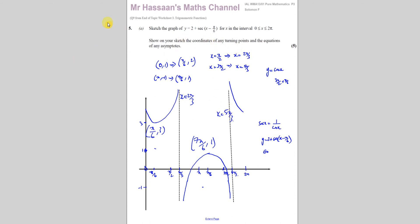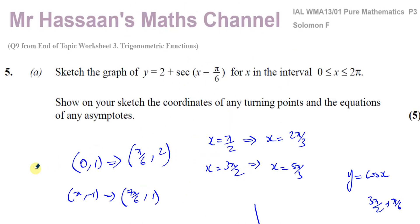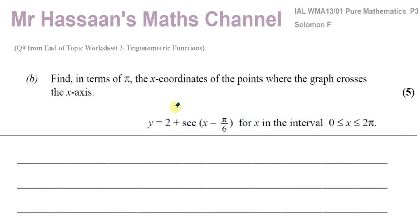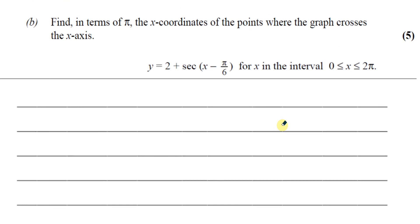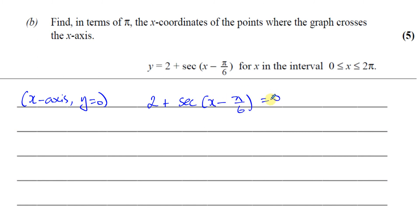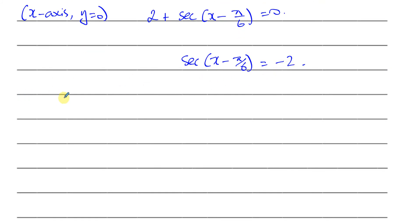Part b asks us to find, in terms of pi, the x-coordinates of the points where the graph crosses the x-axis. Where it crosses the x-axis we know y equals zero. So we set two plus secant of x minus pi over six equal to zero. This gives secant of x minus pi over six equals minus two. Since the reciprocal of secant is cosine, this means cosine of x minus pi over six equals negative one half.